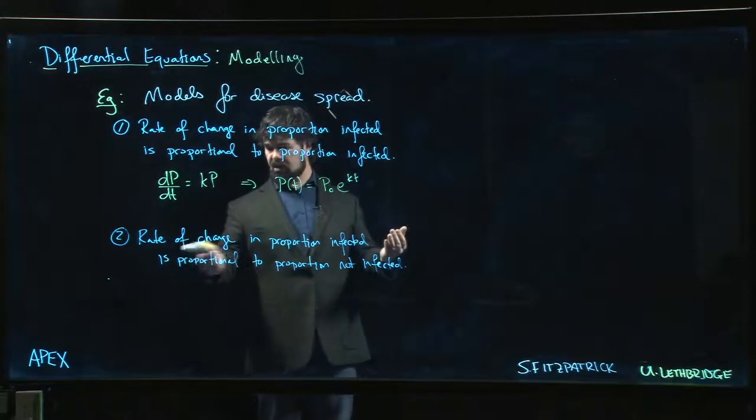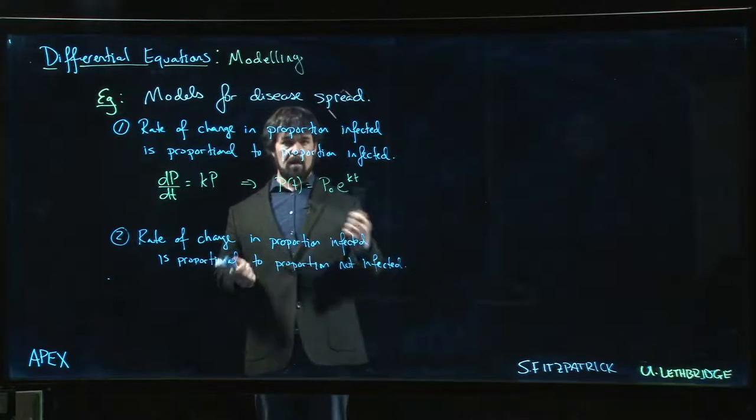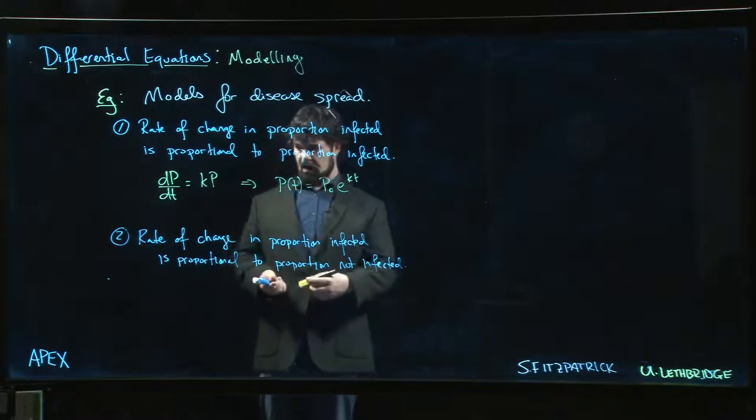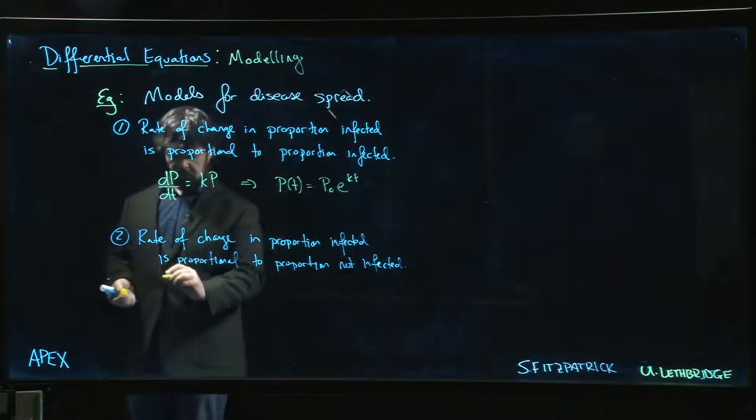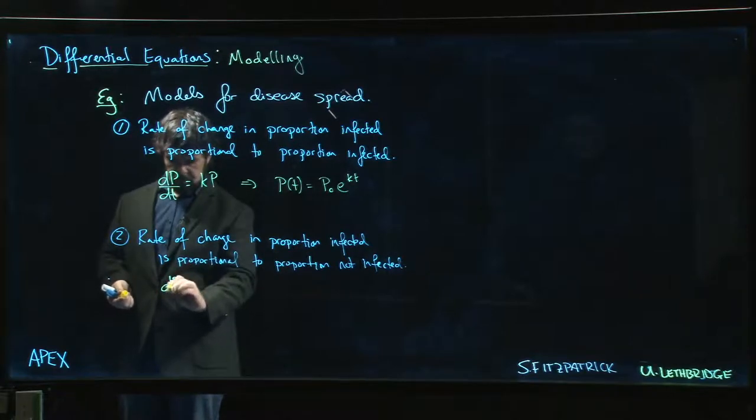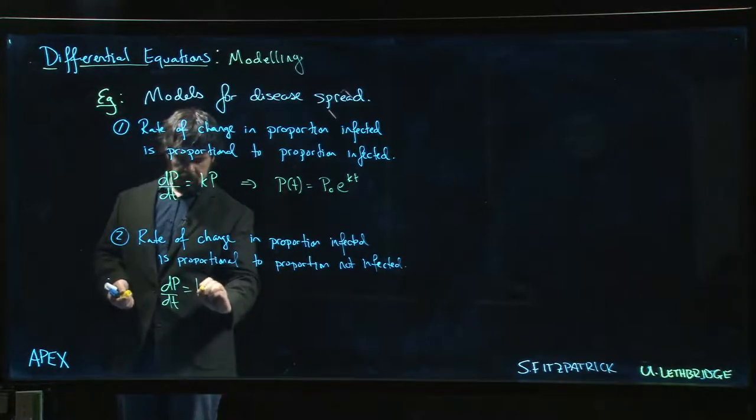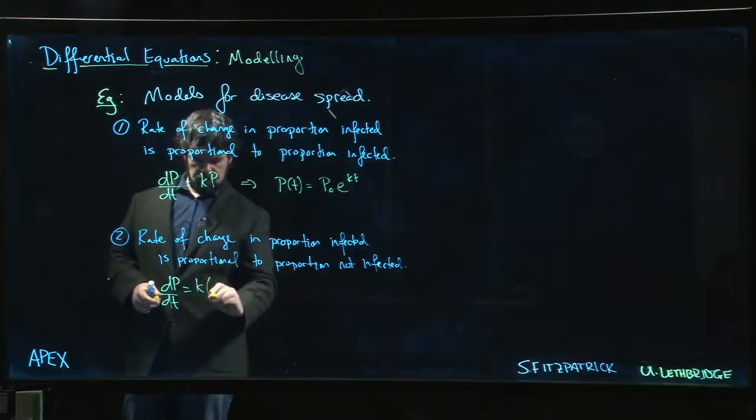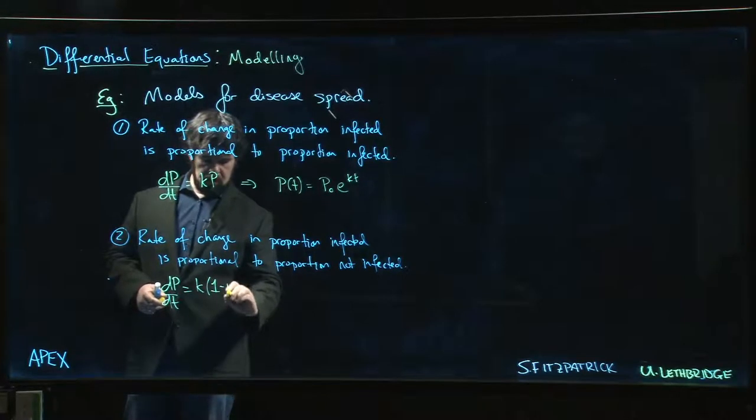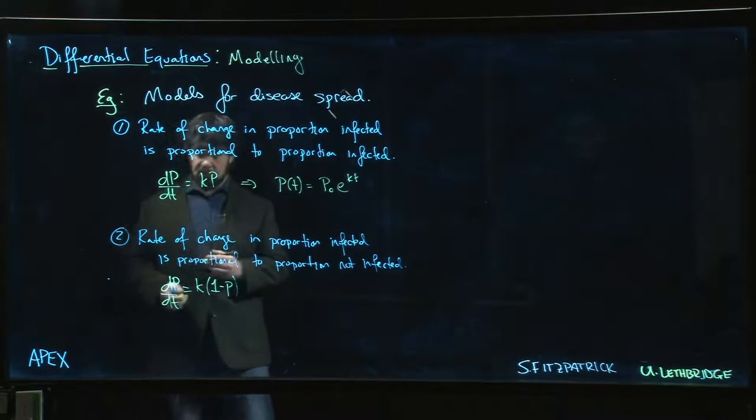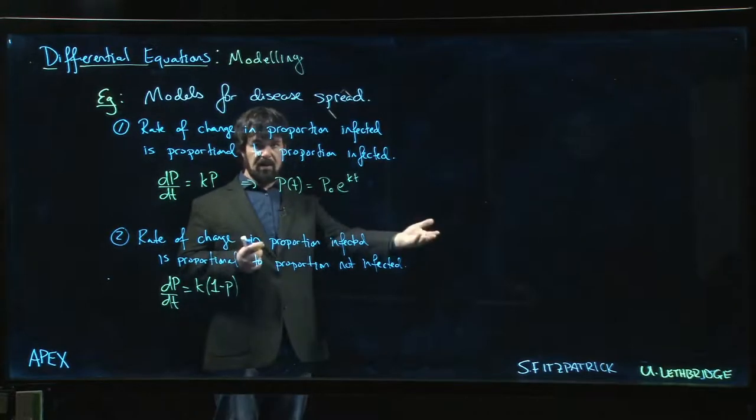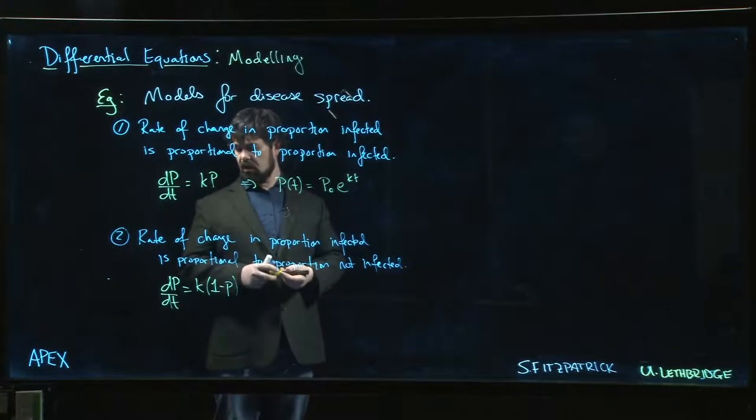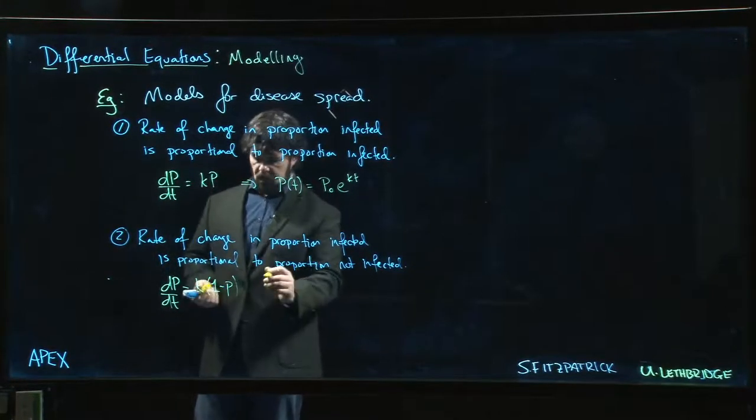So maybe the right model is to say that the rate of change should be proportional not to how many are currently infected, but how many are not infected. Now we have something that looks like dp/dt is a multiple of the proportion not infected. If p is the proportion infected, well one minus p would be the proportion that's not infected, because infected plus not infected adds up to one total population.